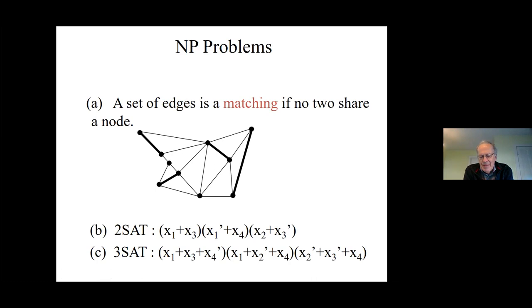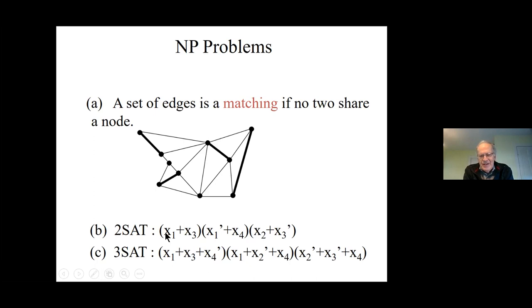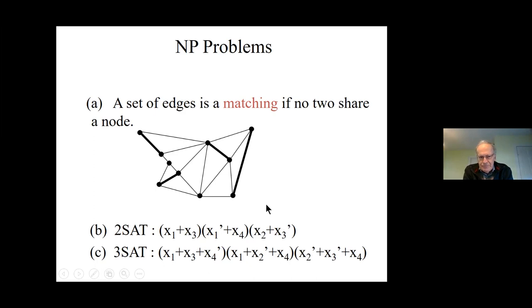The Boolean satisfiability problem, in a special simple form, involves a conjunction — an AND — of three clauses, where each clause is an OR of three variables, possibly negated. Plus means OR, times means AND, and you want to know whether there's some way to substitute zeros and ones for the X's so that the whole thing is true. In 2-SAT you're allowed at most two variables per clause; in 3-SAT, three. These are all NP because a purported solution is easily checked.